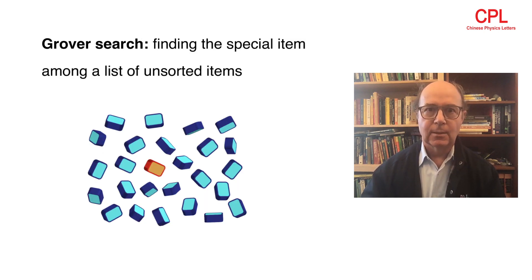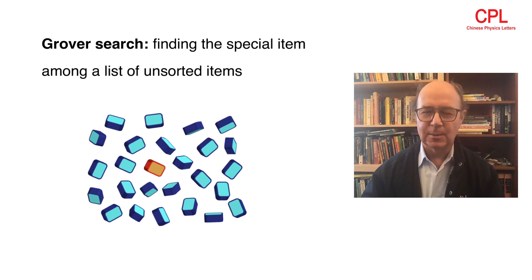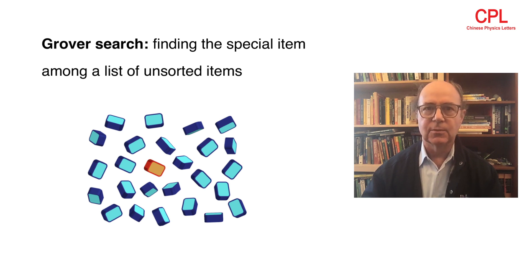Now, to test that out, we wanted to do a definite problem, so we homed in on what's called the Grover problem, one of the classic problems of quantum computing.